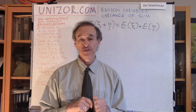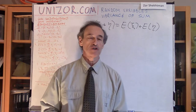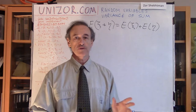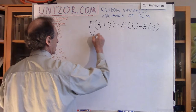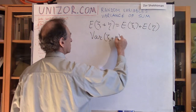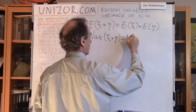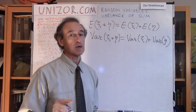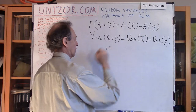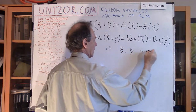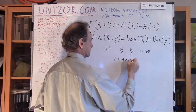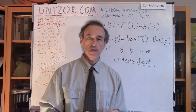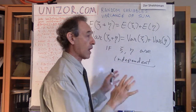It would be very nice to see something like this with variances or standard deviation. Well, it's not exactly like this. The goal of this lecture is to prove that the variance of the sum of two different random variables is equal to the sum of their variances, but only if they are independent. Independence is a very important property, and we discussed it in the previous lecture.